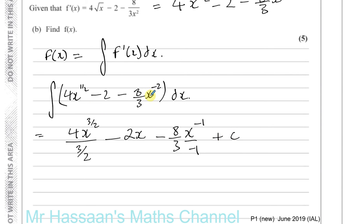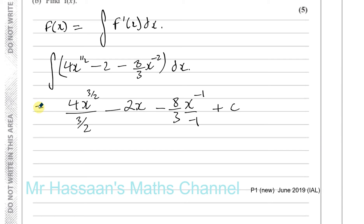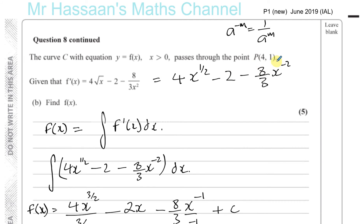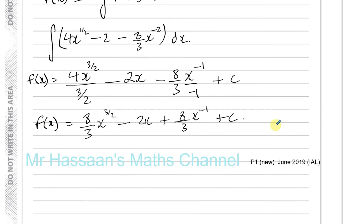When you integrate you must include the constant of integration + c. Dividing by a fraction is the same as multiplying by its reciprocal, so 4 × (2/3) = 8/3. This gives f(x) = (8/3)x^(3/2) − 2x + (8/3)x^(−1) + c. We still need to find c, using the fact that the curve passes through point P(4, 1).